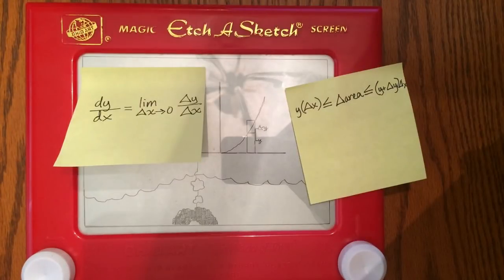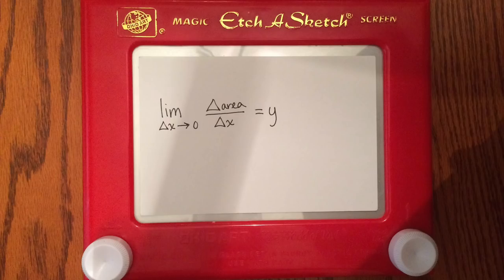The area of the rectangle just under the curve is Y times delta X, and the area of the entire rectangle is the quantity Y plus delta Y times delta X. As delta X goes to zero, so does delta Y. In other words, the derivative with respect to X of the area under the curve equals Y. And that is the fundamental theorem of calculus.